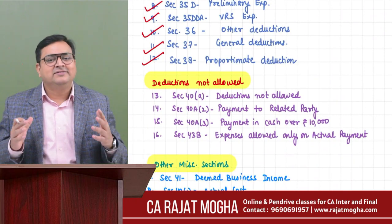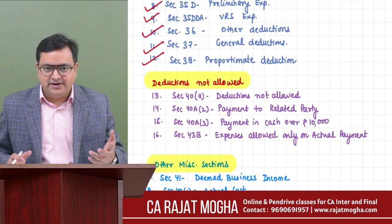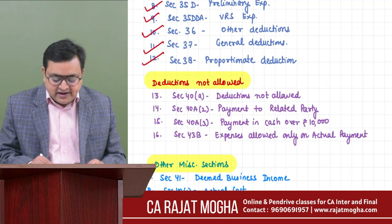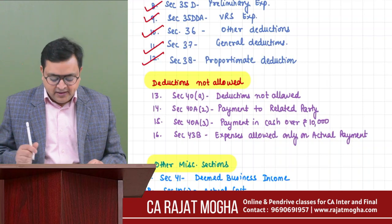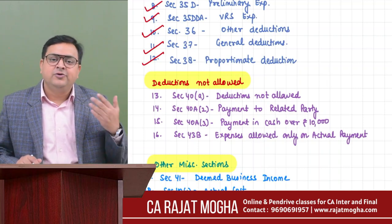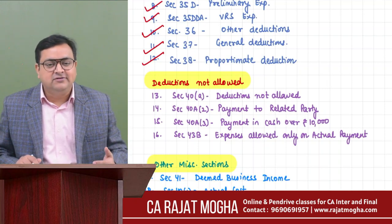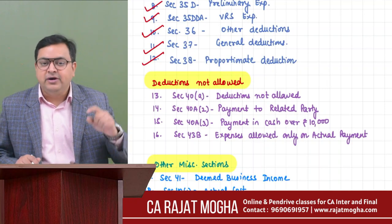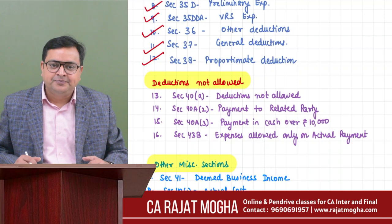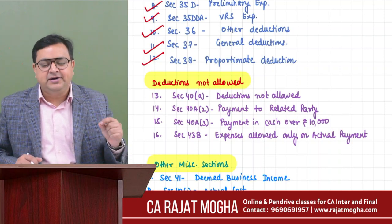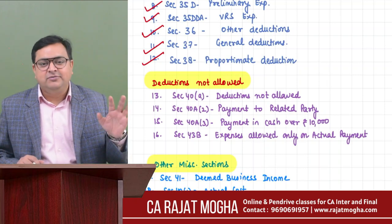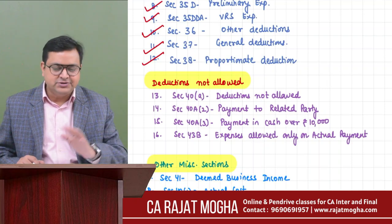PGBP is an important chapter and these are sections of utmost importance. Section 40(a) has a list of five or six expenses. One important one is: if you are paying interest, royalty, or fees for technical services outside India and you are not deducting TDS or not depositing TDS, it will not be allowed. Second: if you are paying to a resident within India and TDS provisions are applicable and you have not deducted or not deposited TDS up to the due date of ROI, then 30% will be disallowed.